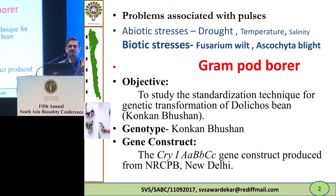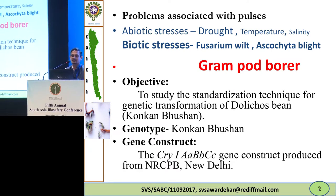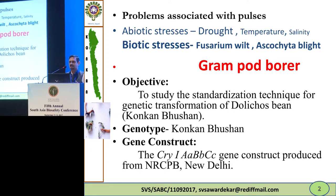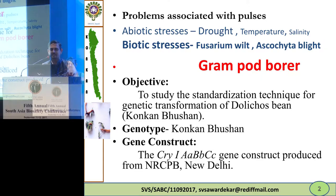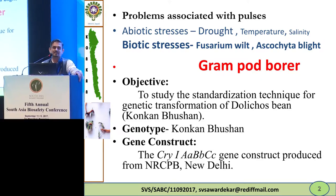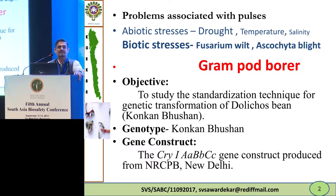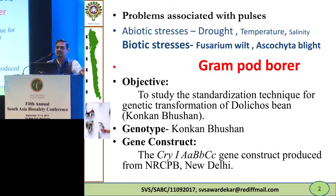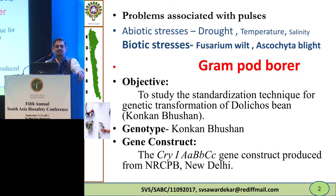The problems associated with pulses include abiotic stresses such as drought, temperature, and salinity. As far as biotic stress is concerned, that is Pythium wilt affecting the majority of the crop. In Maharashtra, this variety is very popular and near about 40% loss has been noticed, and similarly in parts of Karnataka, Rajasthan, and Gujarat.